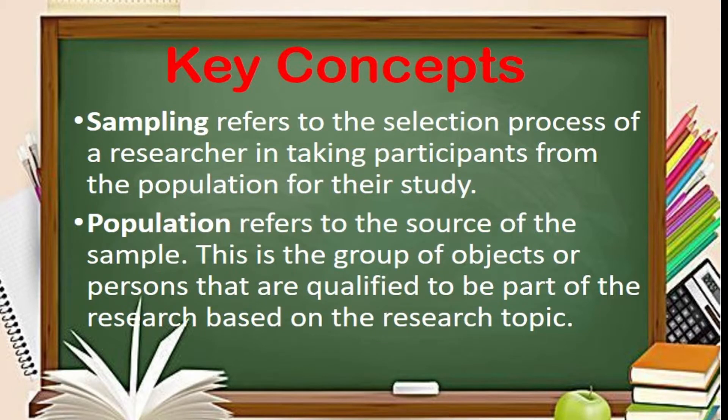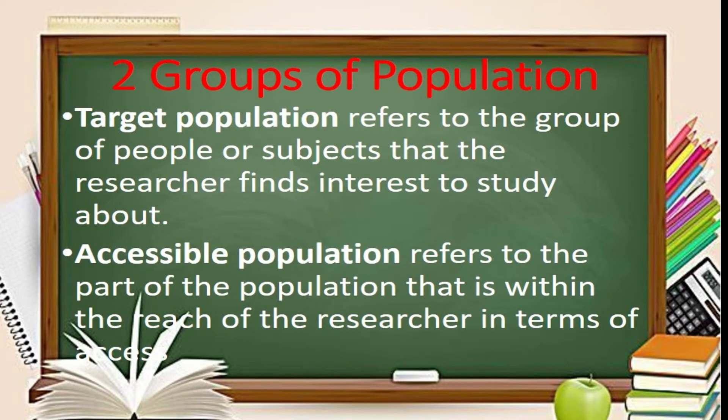Let's start with Sampling in Research. Sampling is a process through which a researcher selects a portion or segment from the population at the center of the researcher's study. The population is a group of persons or objects that possess some common characteristics that are of interest to the researcher and about which the researcher seeks to learn more. There are two groups of population: the target population and the accessible population.